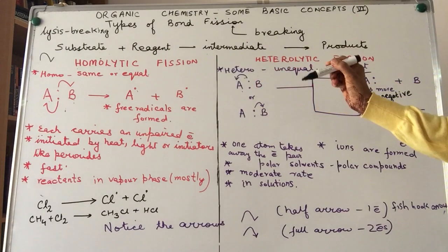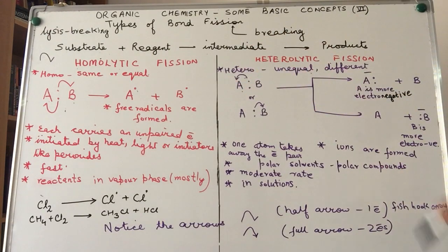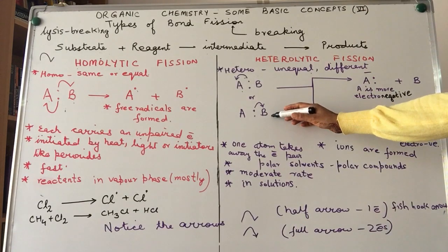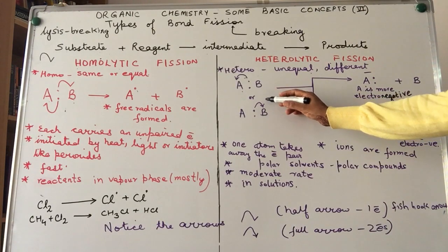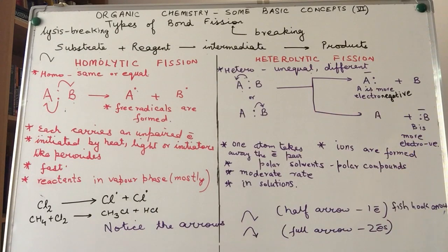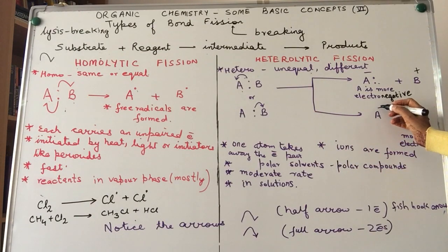If B is more electronegative, B takes away the shared pair of electrons. If A is more electronegative, it takes away the shared pair, acquires a negative charge, and B acquires a positive charge. Second possibility: if B was more electronegative, A acquires a positive charge and B acquires a negative charge. In other words, this type of bond fission results in the formation of ions. We use the term carbocation and carbanion when we are talking about ions involving carbon.